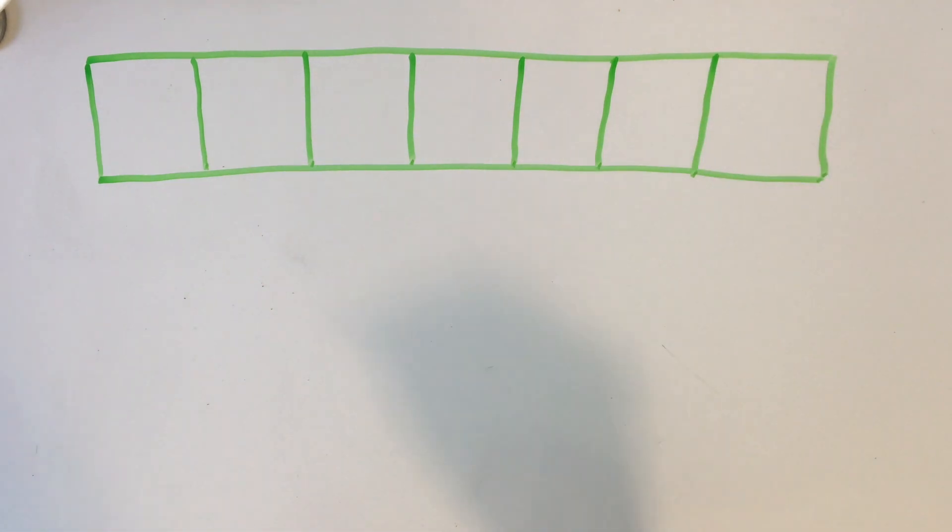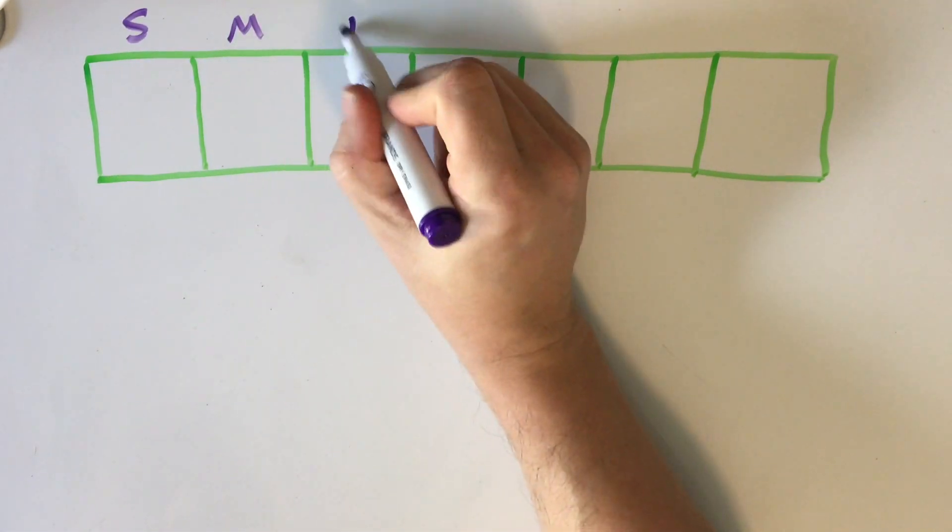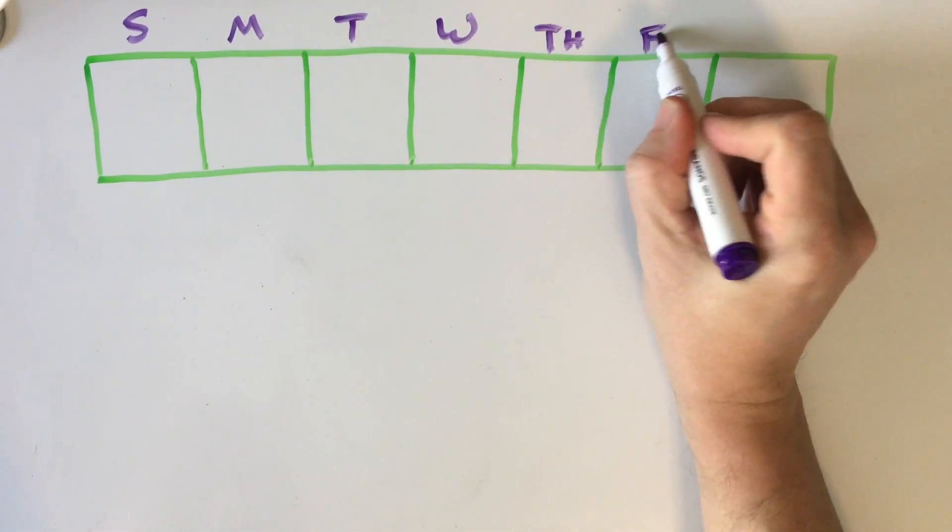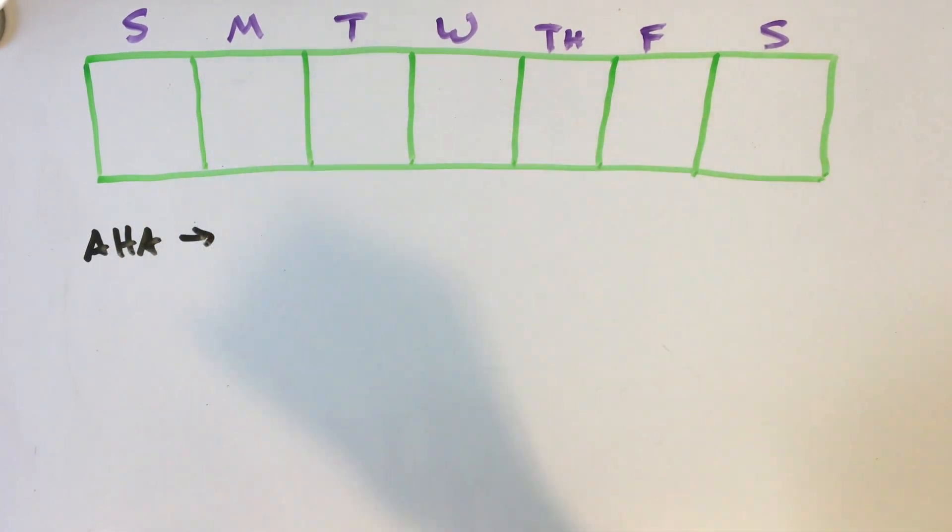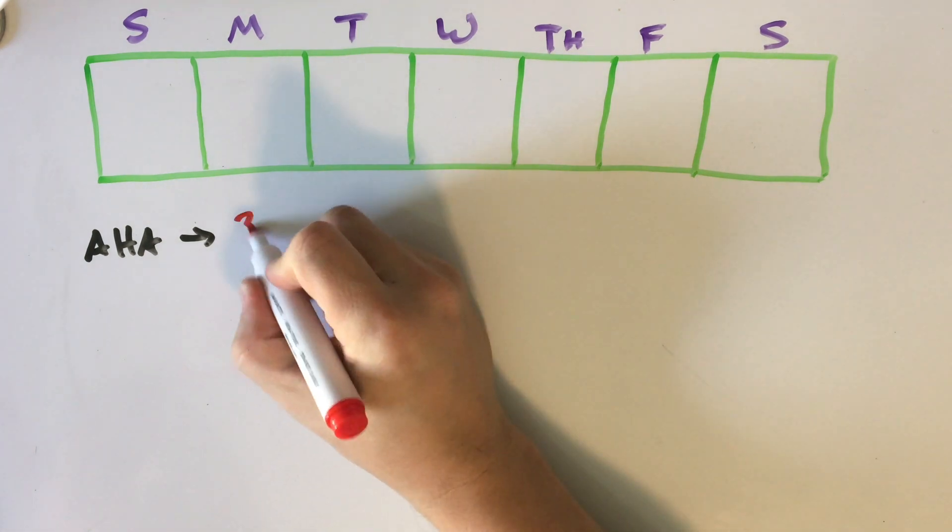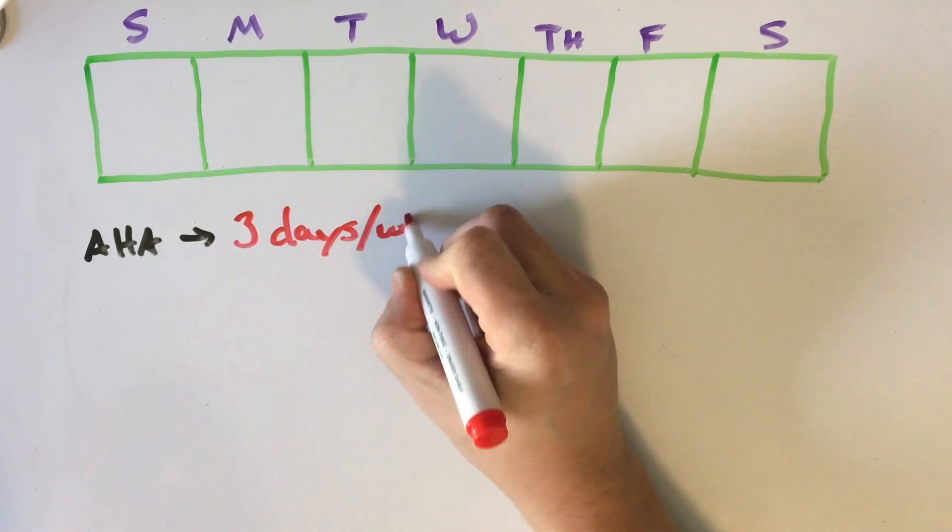According to the American Heart Association, they recommended three days per week of cardiovascular exercise to begin with. That would be a good starting point for most people. So we're going to plug that in. We're going to do three days.